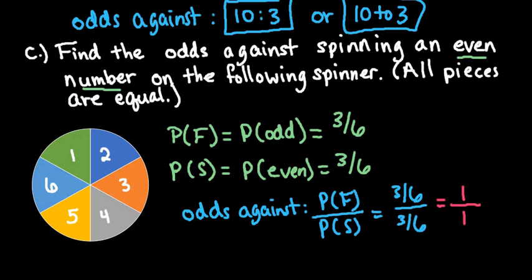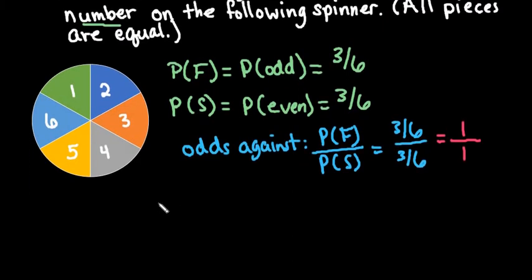Because we're talking about odds, we don't want to write it as just 1. We write it as: the odds against spinning an even number is 1 to 1. For every 1 failure, there's also 1 success. So it is possible to have 1 to 1 odds.